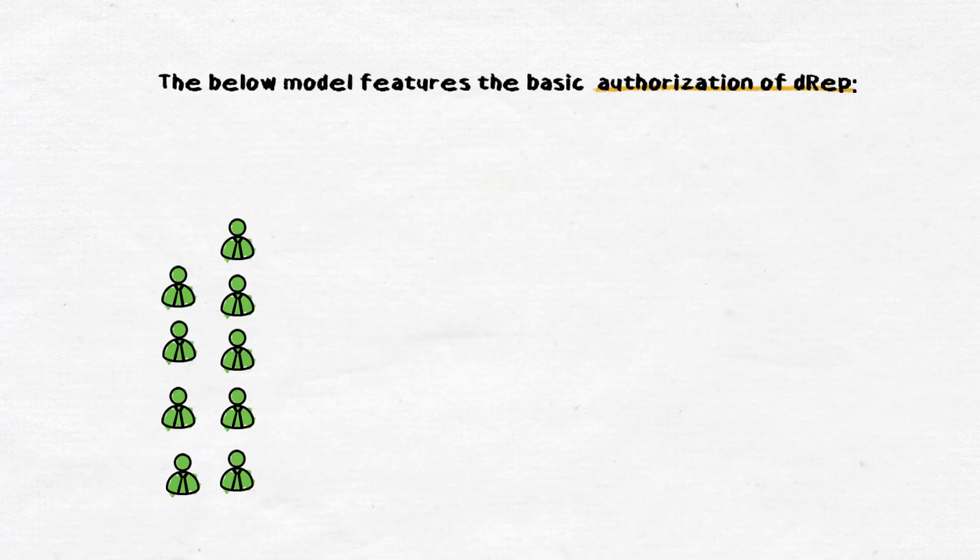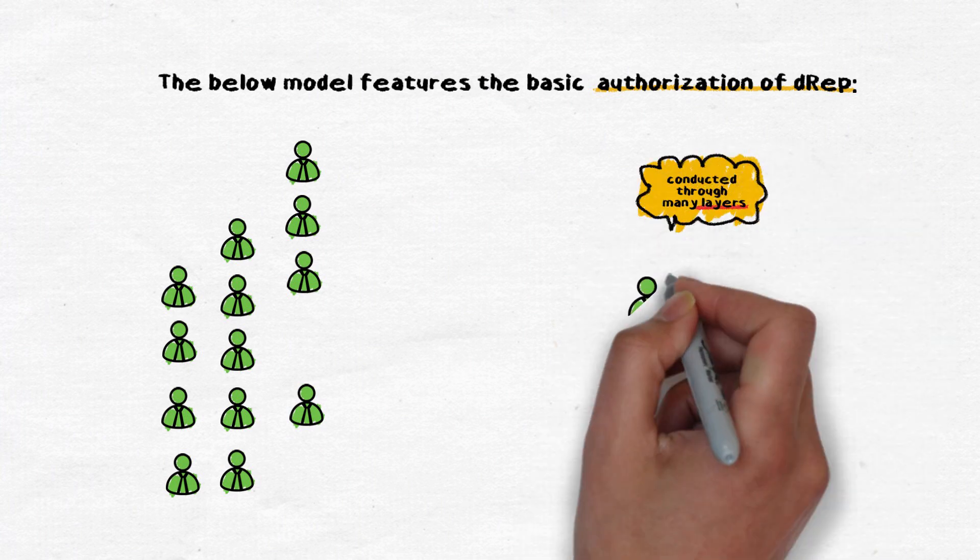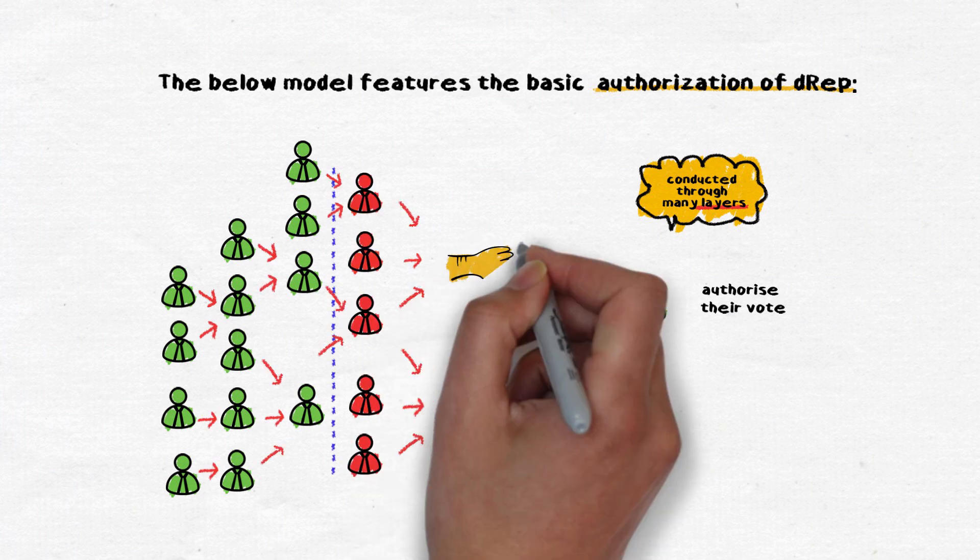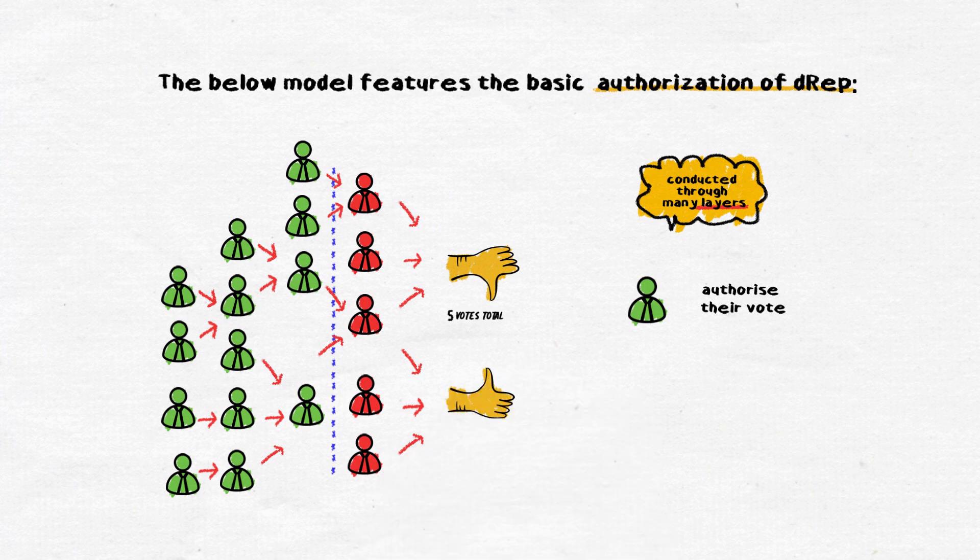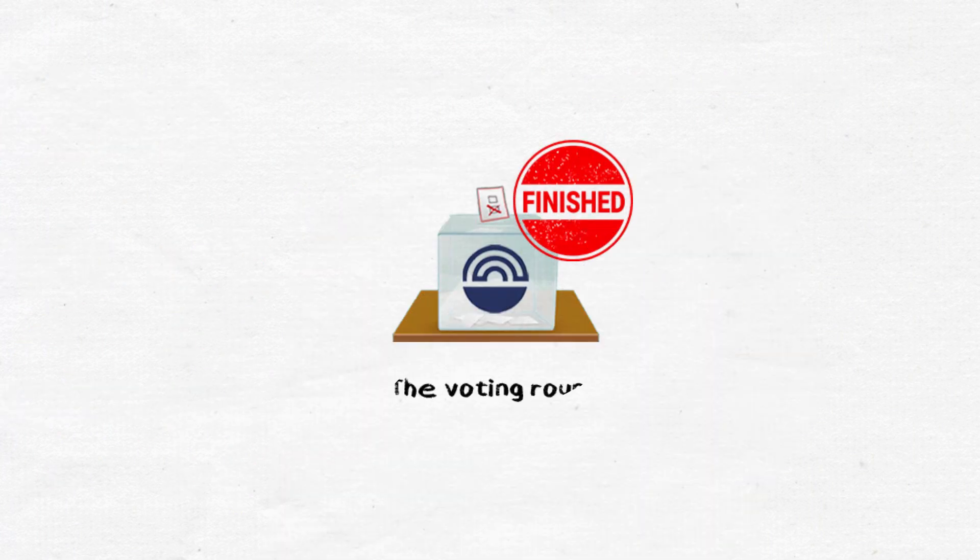First, the delegation in DREPs can be conducted through many layers. The green group of voters will delegate their votes to the one who they trust. People who are given these delegations can give it to others. Second, the red group of direct voters cast their vote directly. The figures below can be understood as the number of voters represented by each representative.